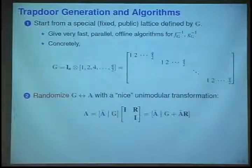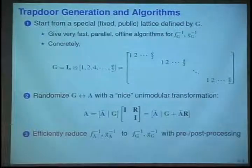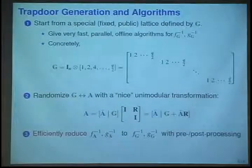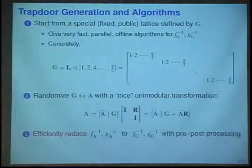And then we just randomize G with a single matrix mult, and that's very easy. And then here's where the actual work is, as we reduce inverting F and G relative to this random matrix A to the inversion algorithms for G, and that's it.